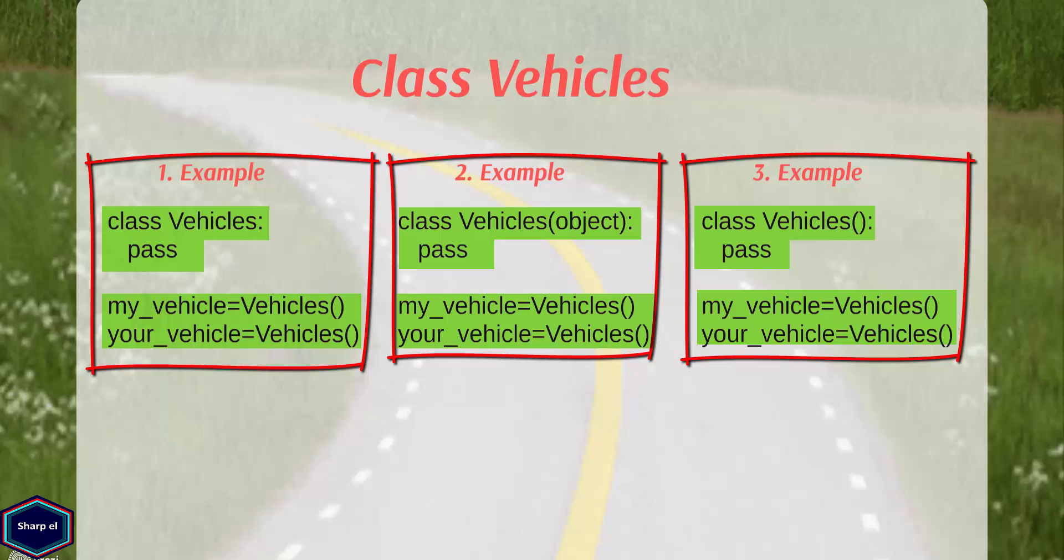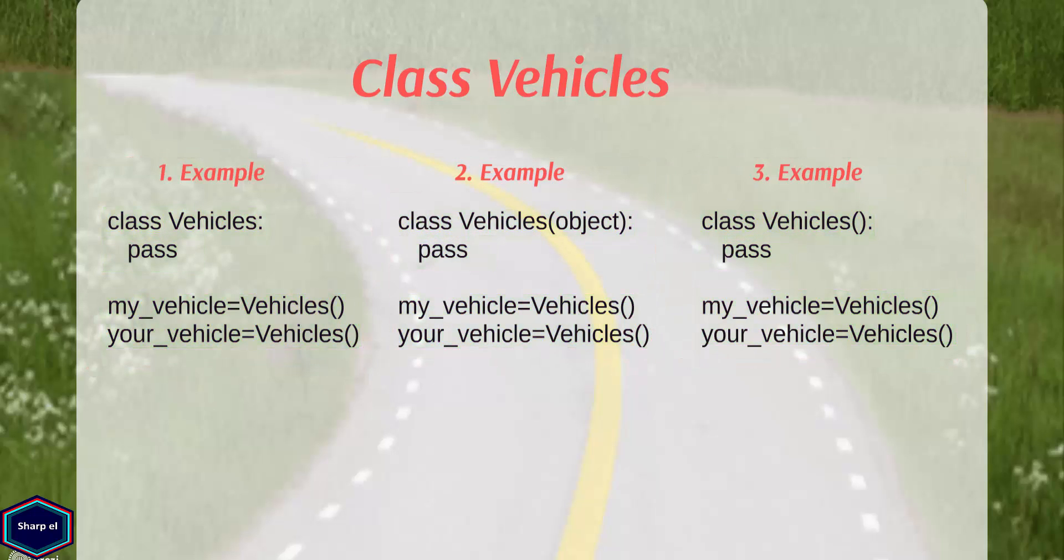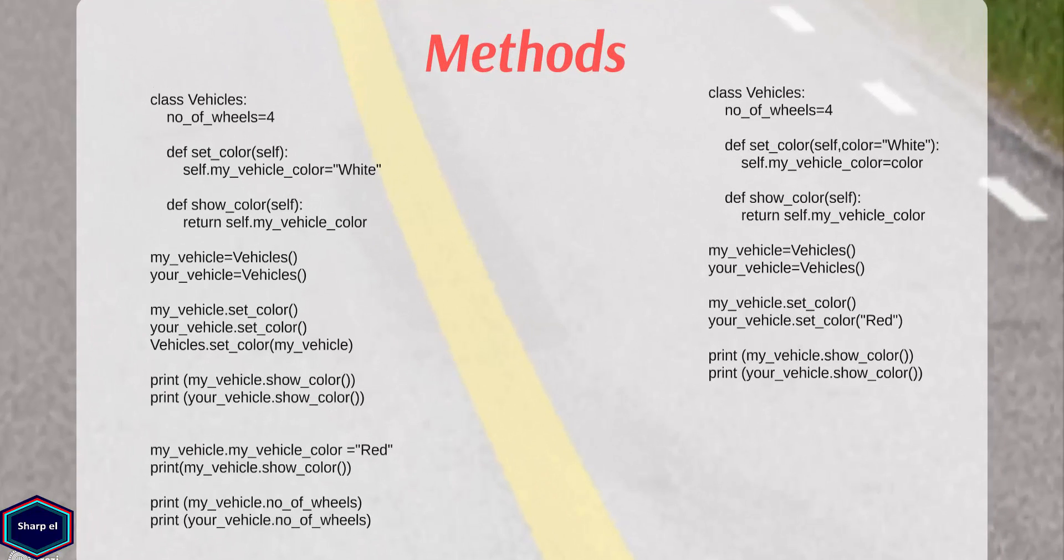Now let's move a bit further and add some methods to our class vehicles. In Python we have functions and methods. A method in Python is actually a function but it belongs to a class. Both functions and methods start with def keyword short for define, followed by a space and name of the method or function. This is followed by a set of parentheses containing the parameter list and terminated with a colon.